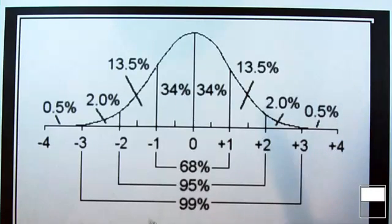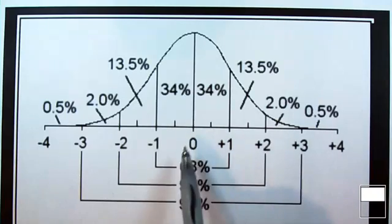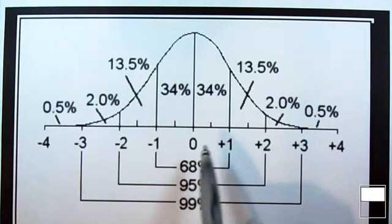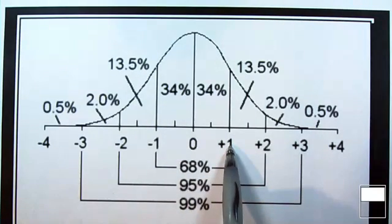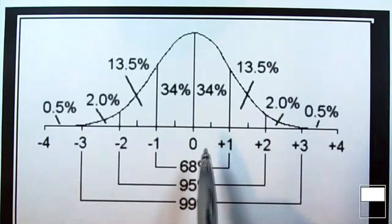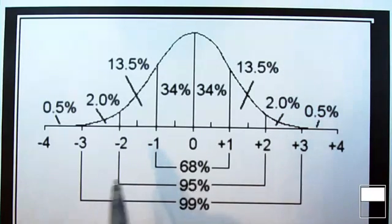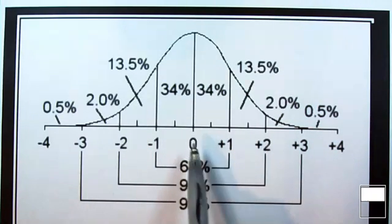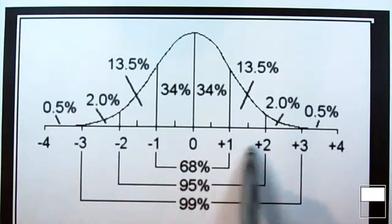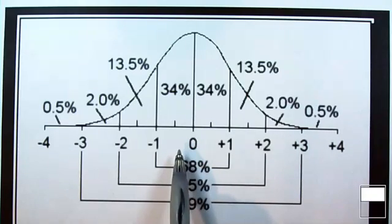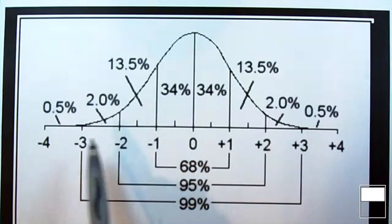Z-scores have a mean of 0 and a standard deviation of 1. When you look at this distribution, you'll notice that as we move to the right we have our positive z-scores, and when we go to the left we see our negative z-scores.